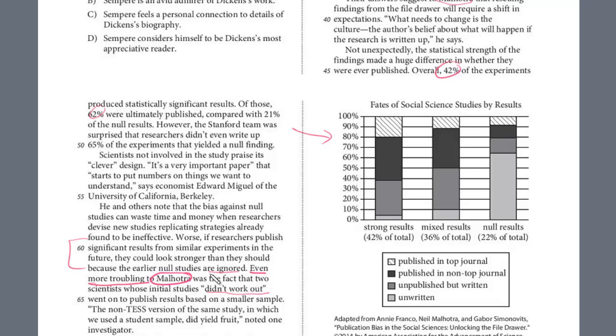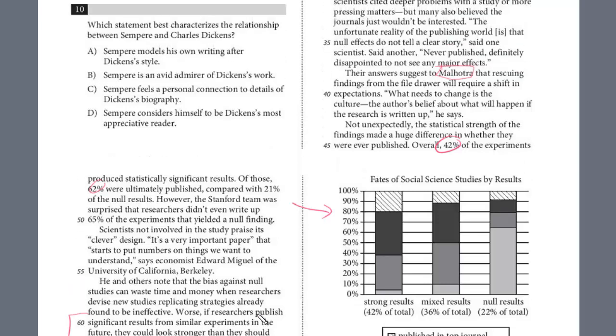but even more troubling is initially the studies didn't work out, so there was a null result. But they went on to publish with a smaller sample that did yield fruit, so they kind of like parsed it down just to like selectively to conform it, and that's really harmful to Malhotra and to me as well. It doesn't seem fair.